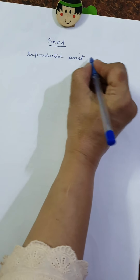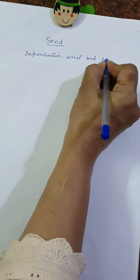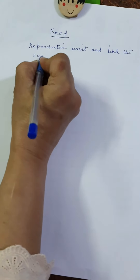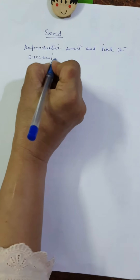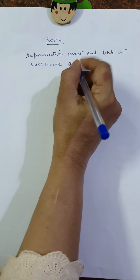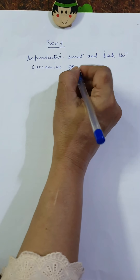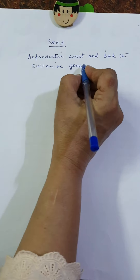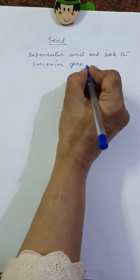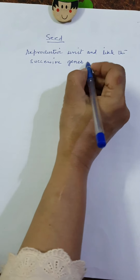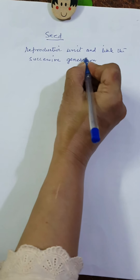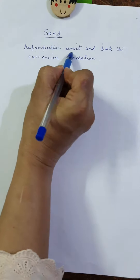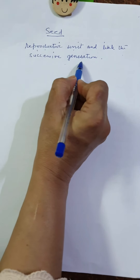Seed links successive generations. After one generation, one seed comes from the same seed. For example, a gram seed gives rise to a gram plant, then to another seed — any plant will complete its own generation through seed.